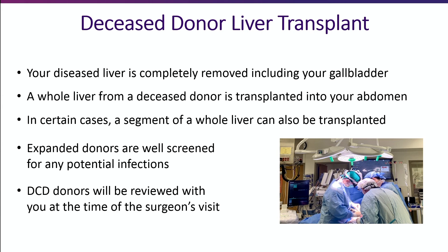Please know that all liver donors are carefully screened for all infectious diseases. Donation after cardiac death, or better known as DCD, is another type of donor liver. These donors come from a non-heart-beating donor. In this type of donation, the donor has irreversible brain injury but does not meet a formal brain death criterion. Families allow the heart to stop beating, and then the organs are recovered in the operating room. During your transplant surgery visit, your transplant surgeon can offer you more information about risks and benefits of this type of donor liver.